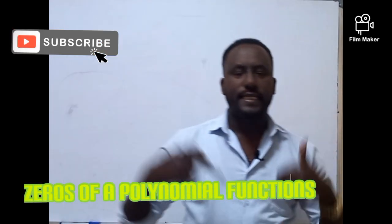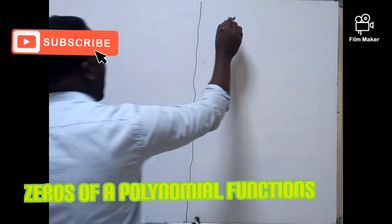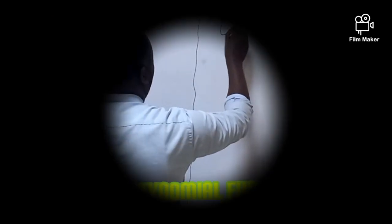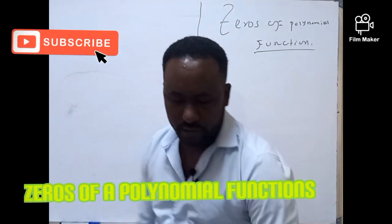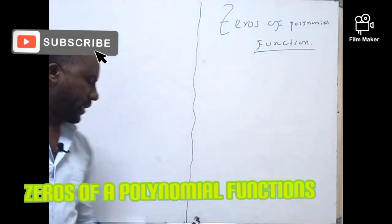On today's lesson, I'm going to focus especially on zeros of polynomial functions in general. What are zeros of polynomial functions in general? This is the lesson we're going to see today — what are the zeros for a polynomial function, and how are we going to elaborate or define the zeros of the polynomial function in general?